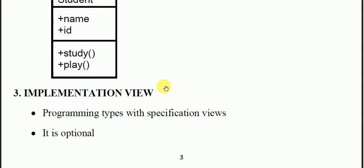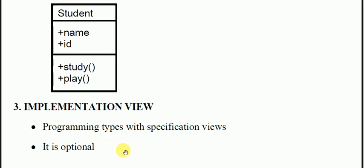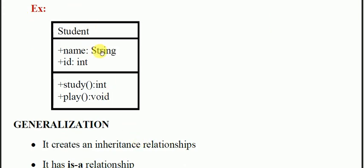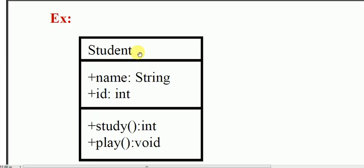This is the implementation view. What is in the implementation view? It is programming types with specification view. We use the programming types with specification view, this is the data type. You can see that this is our implementation view. We are looking at the student, student is the name of our class. We have given the name, we have given the data type. We have given it as the implementation type. This is a particular method or operation because it is study and play. So this is your way to represent a software implementation view.